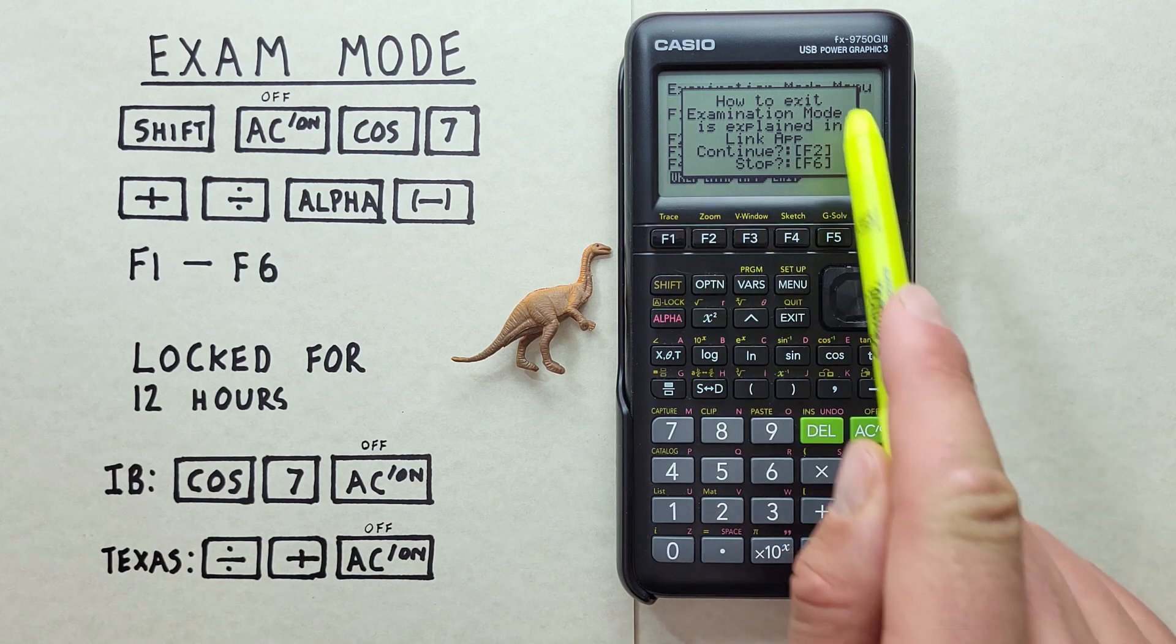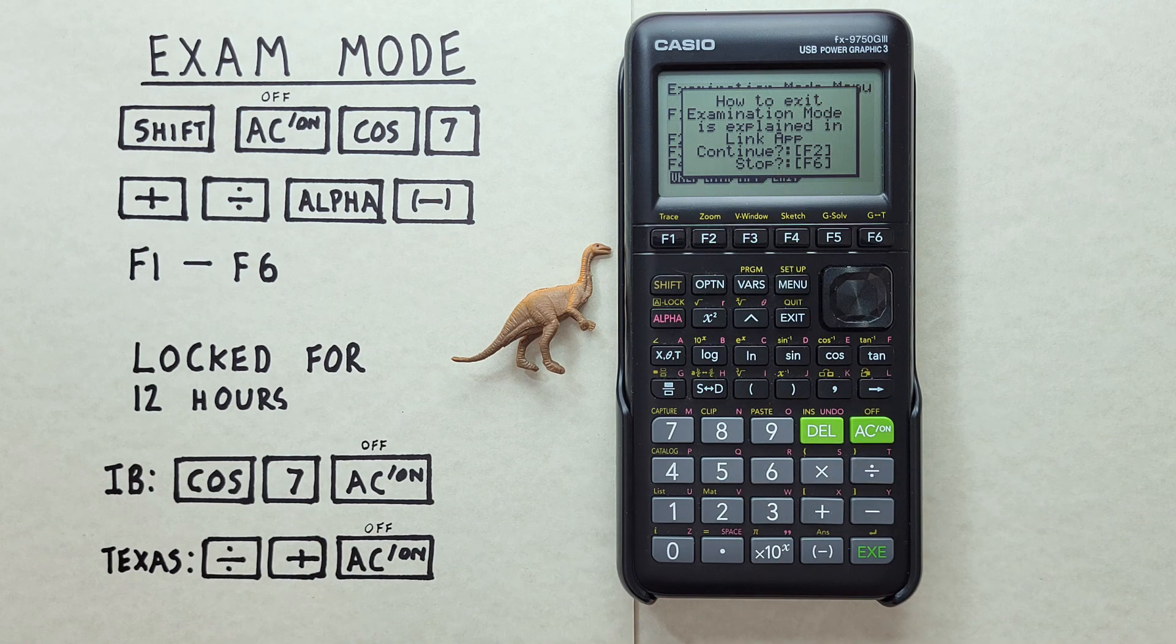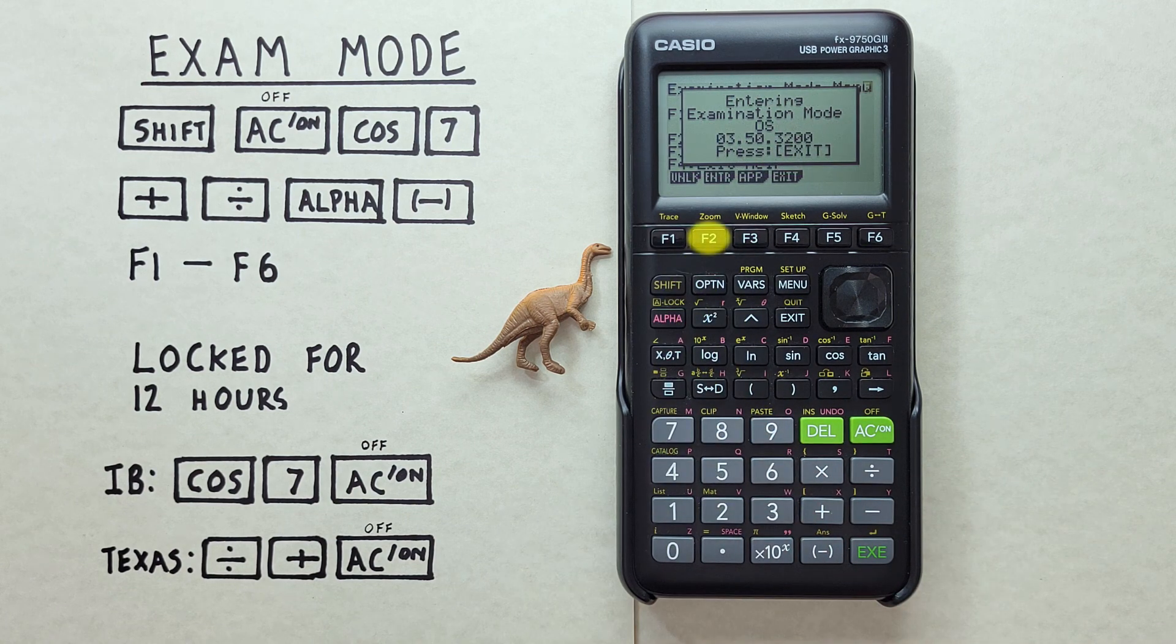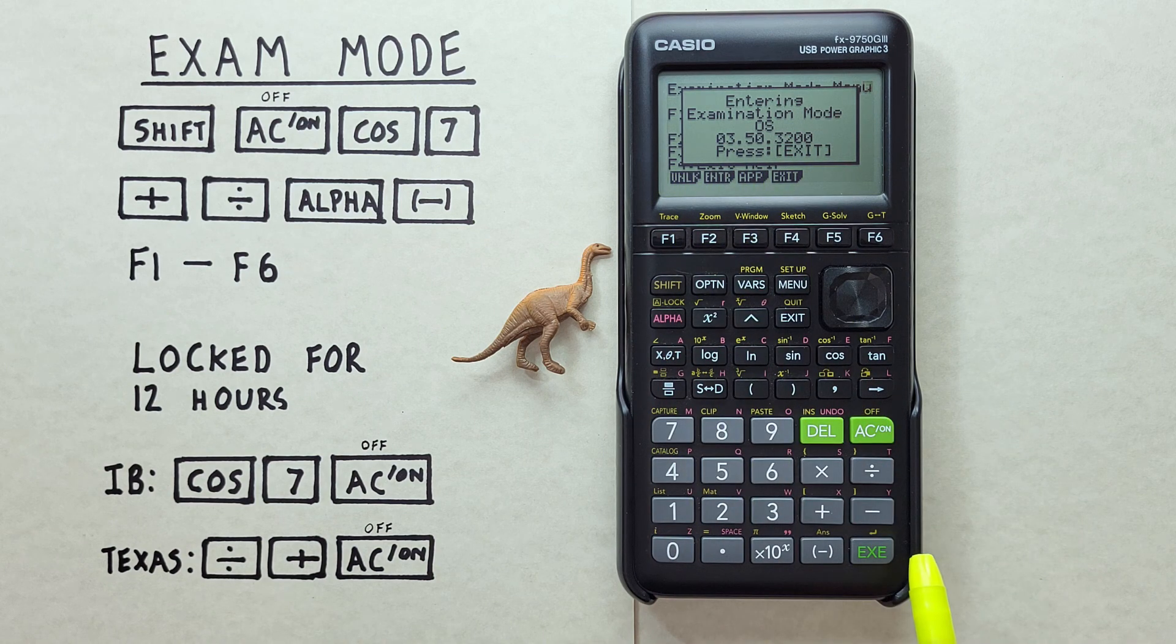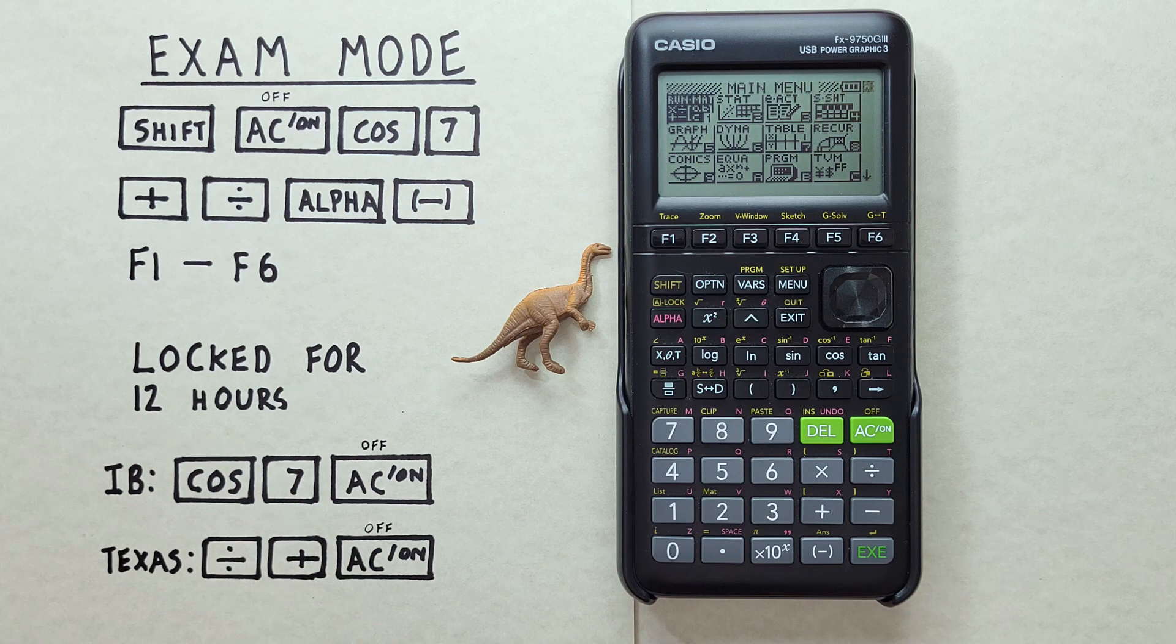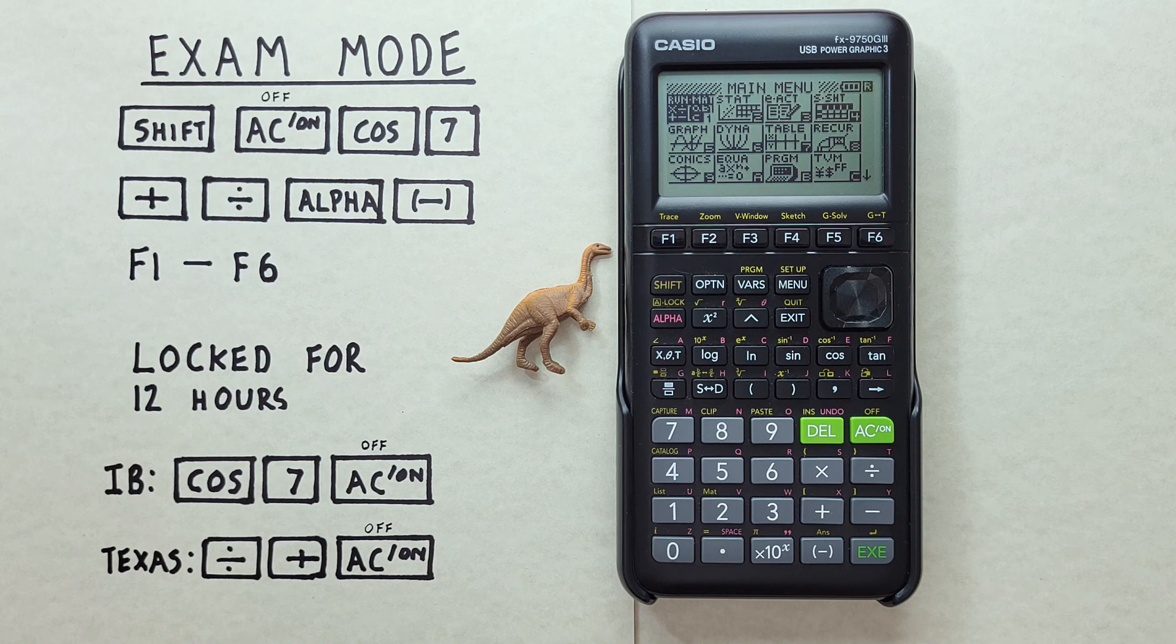Then it reminds us the steps we can use to get out of Exam Mode. Remember, that's the USB cable or the 3-pin cable, or just waiting the 12 hours. And asks us again if we want to continue or if we want to stop. If we want to go back, again, we hit F6. But if we want to continue, we hit F2. There it goes. It tells us we're entering Exam Mode. And we can press Exit. And our calculator restarts in Exam Mode. When we're in Exam Mode, we'll see a flashing letter in the top right-hand corner of the screen there. And R means we're in IB Exam Mode.